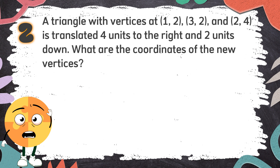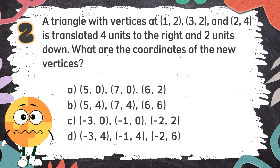Number 2: A triangle with vertices at (1, 2), (3, 2), and (2, 4) is translated 4 units to the right and 2 units down. What are the coordinates of the new vertices? The choices are: A. (5, 0), (7, 0), (6, 2); B. (5, 4), (7, 4), (6, 6); C. (-3, 0), (-1, 0), (-2, 2); D. (-3, 4), (-1, 4), (-2, 6).